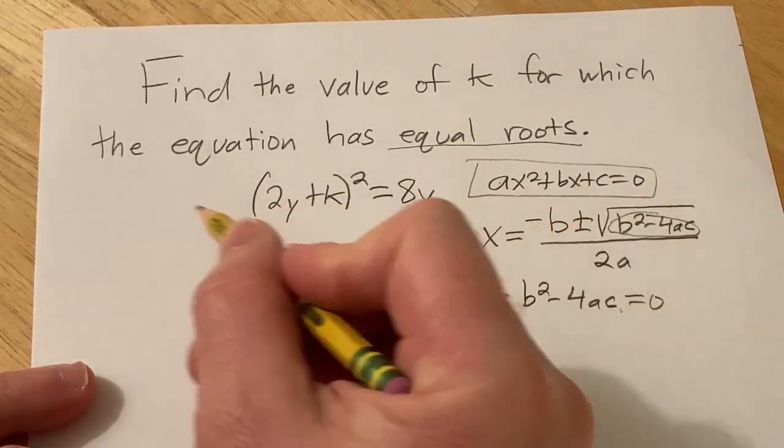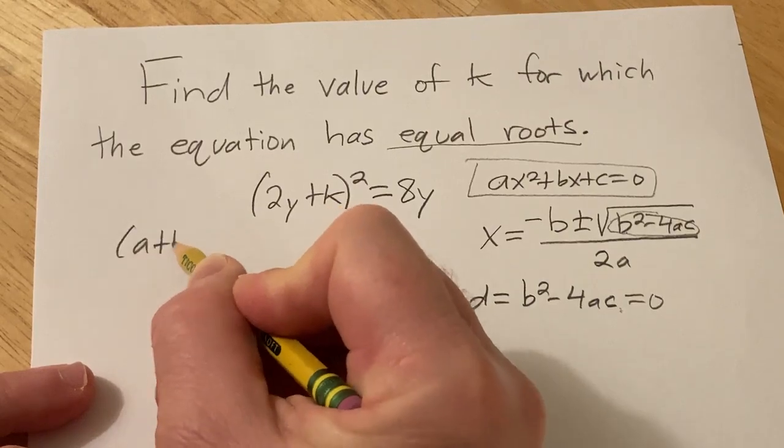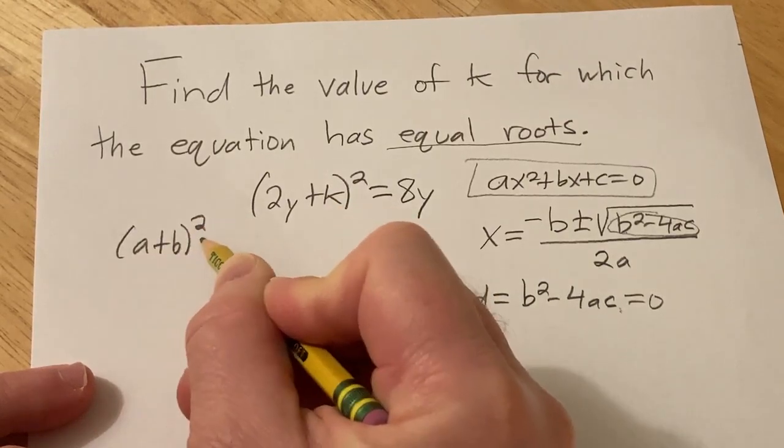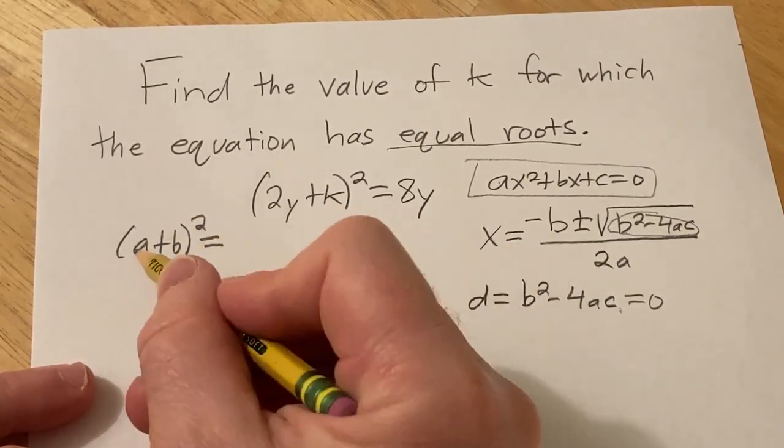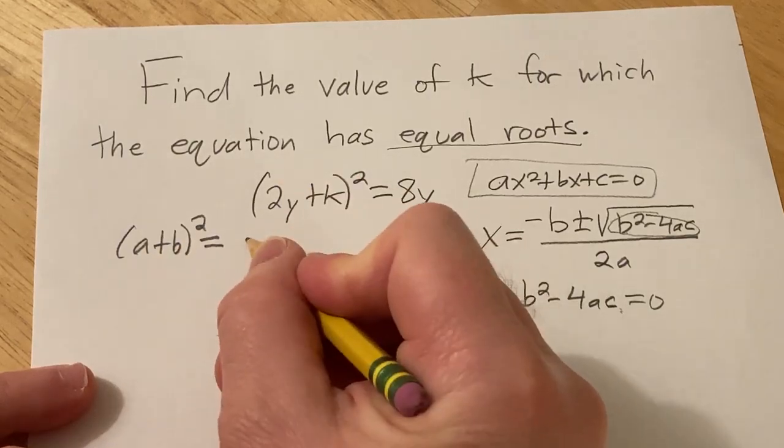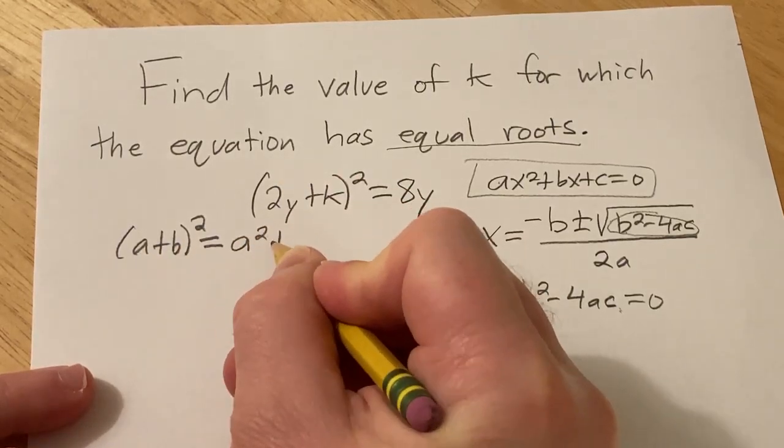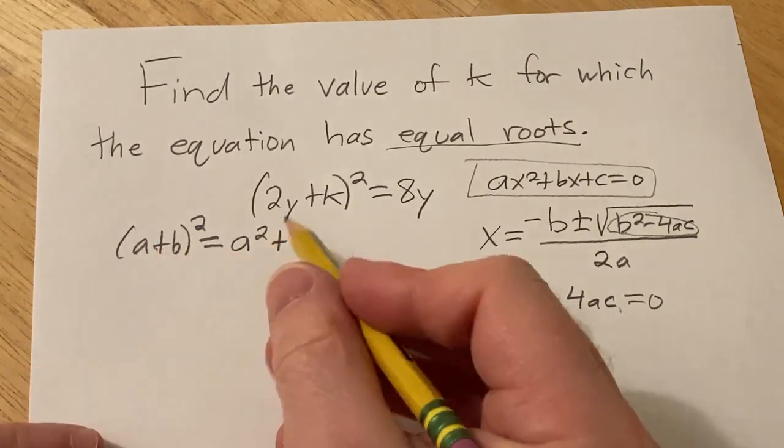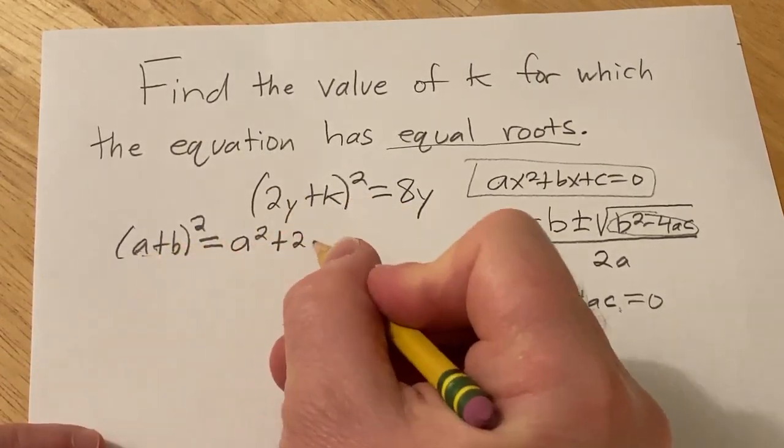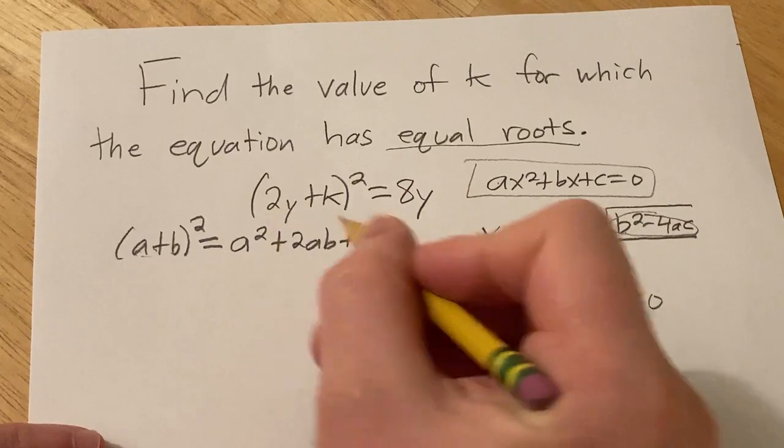We'll start by multiplying this out. There is a formula that lets us do that. If you have (a + b)², think of a as the first piece and b as the second piece, and you square the first piece, you put a plus sign because there's a plus, and then you multiply these and double them, and then you square the last piece.